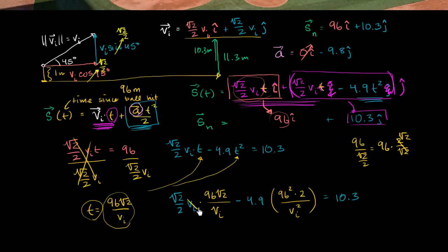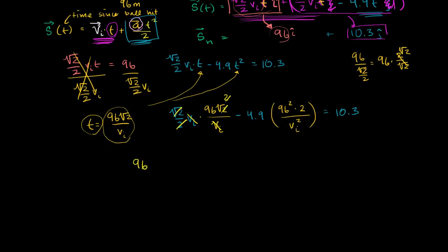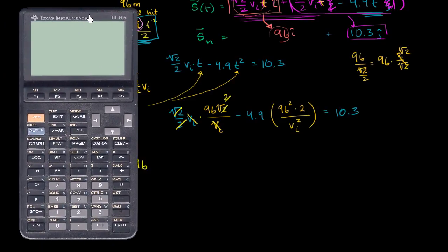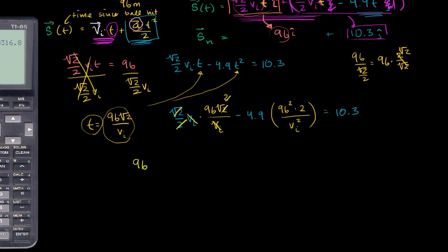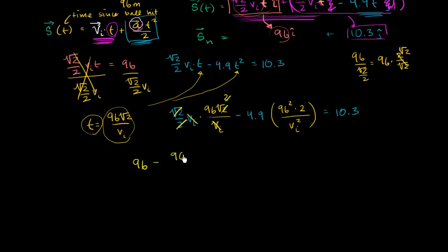Now we simplify. In the first term, v sub i cancels, and square root of 2 times square root of 2 times square root of 2 gives 2, while a 2 in the numerator and denominator also cancel. So the first term simplifies nicely to 96. Then we compute 4.9 times 96 squared times 2, which gives 90,316. So we have: 96 minus 90,316 divided by v sub i squared equals 10.3.